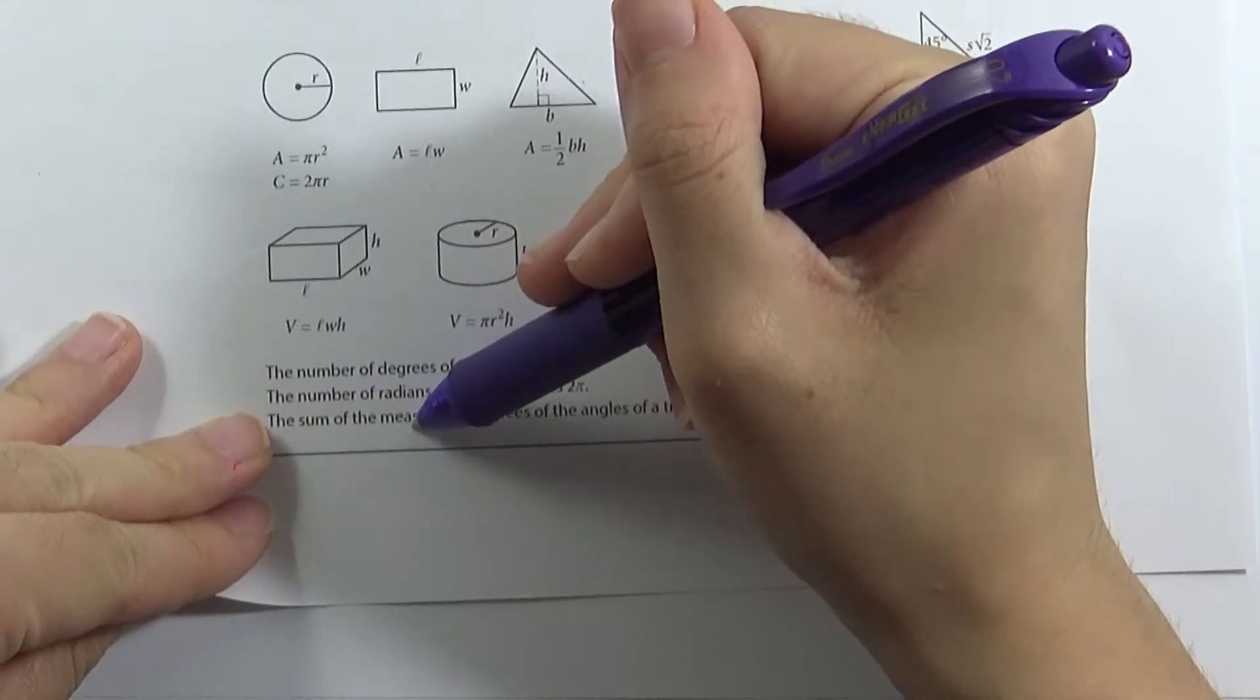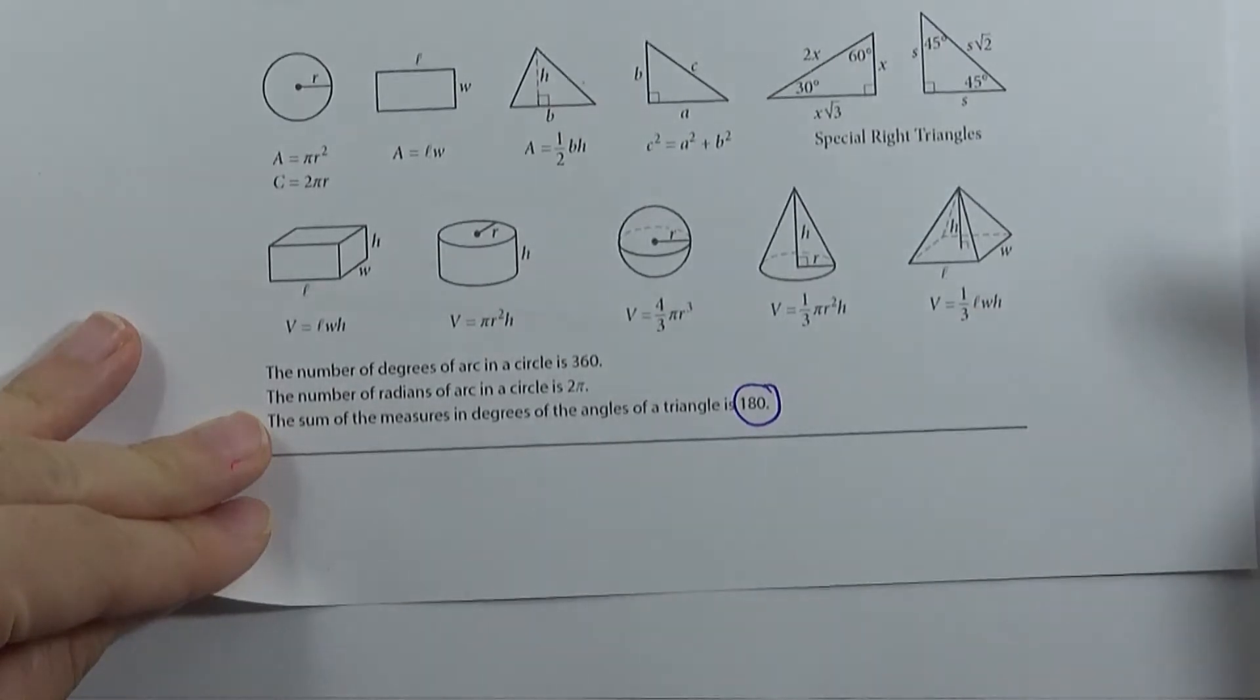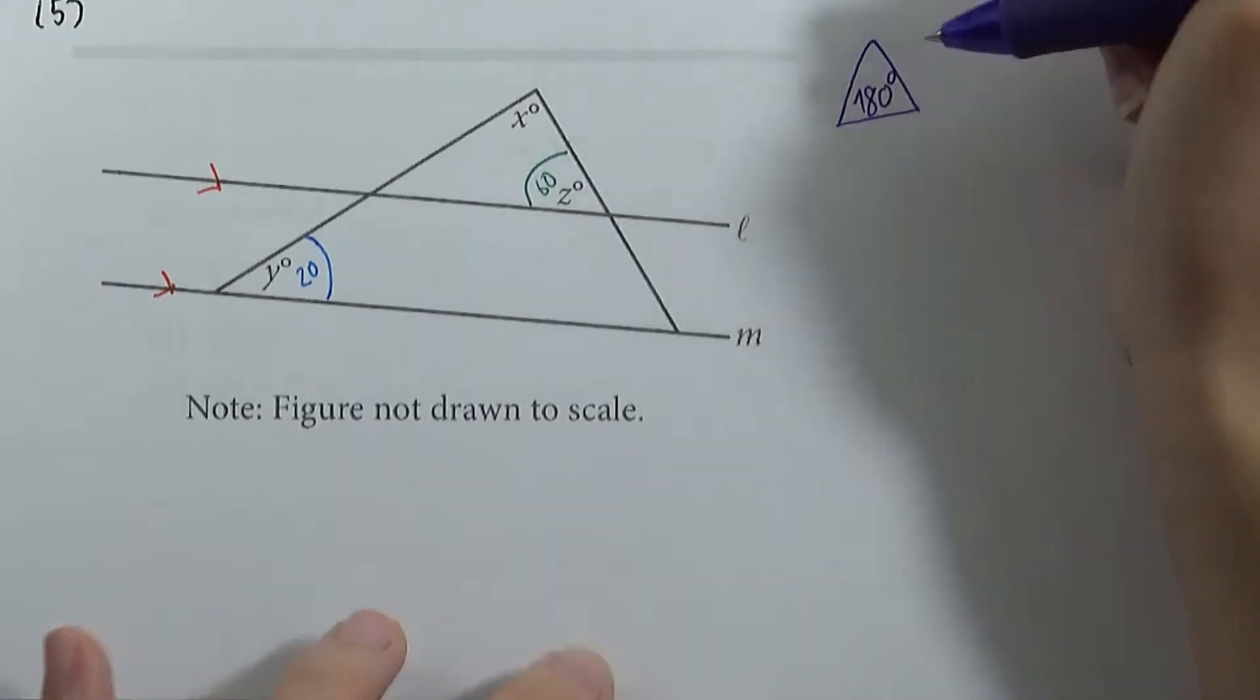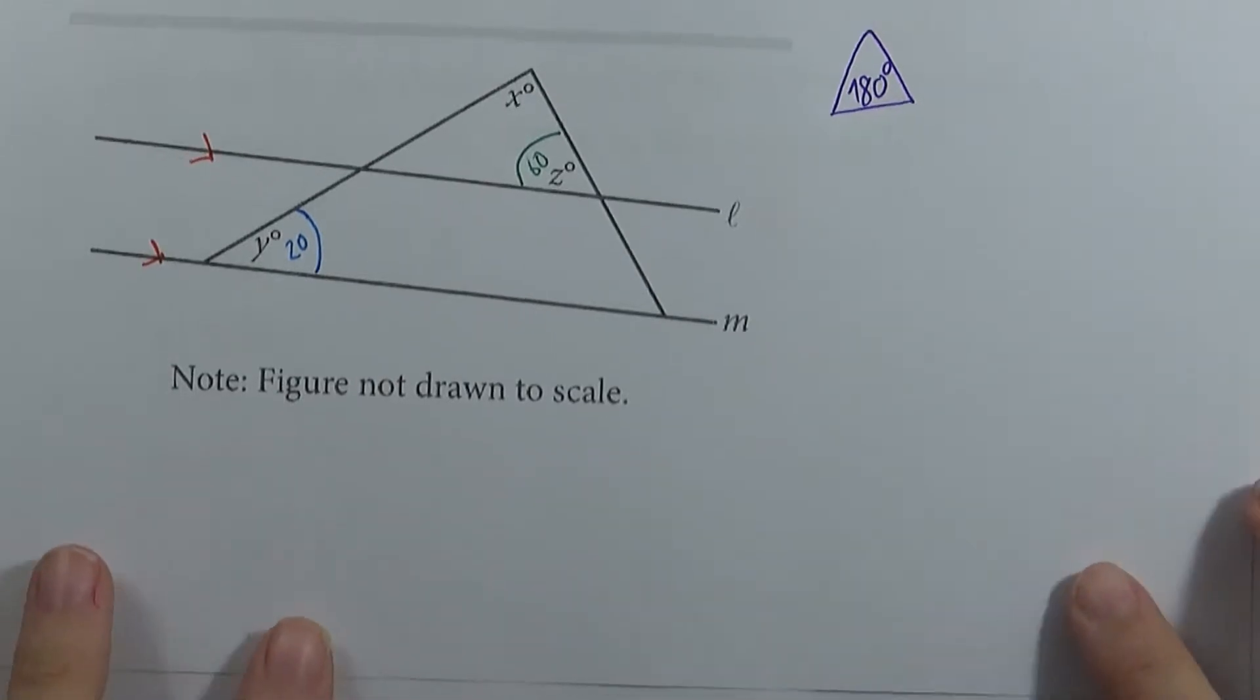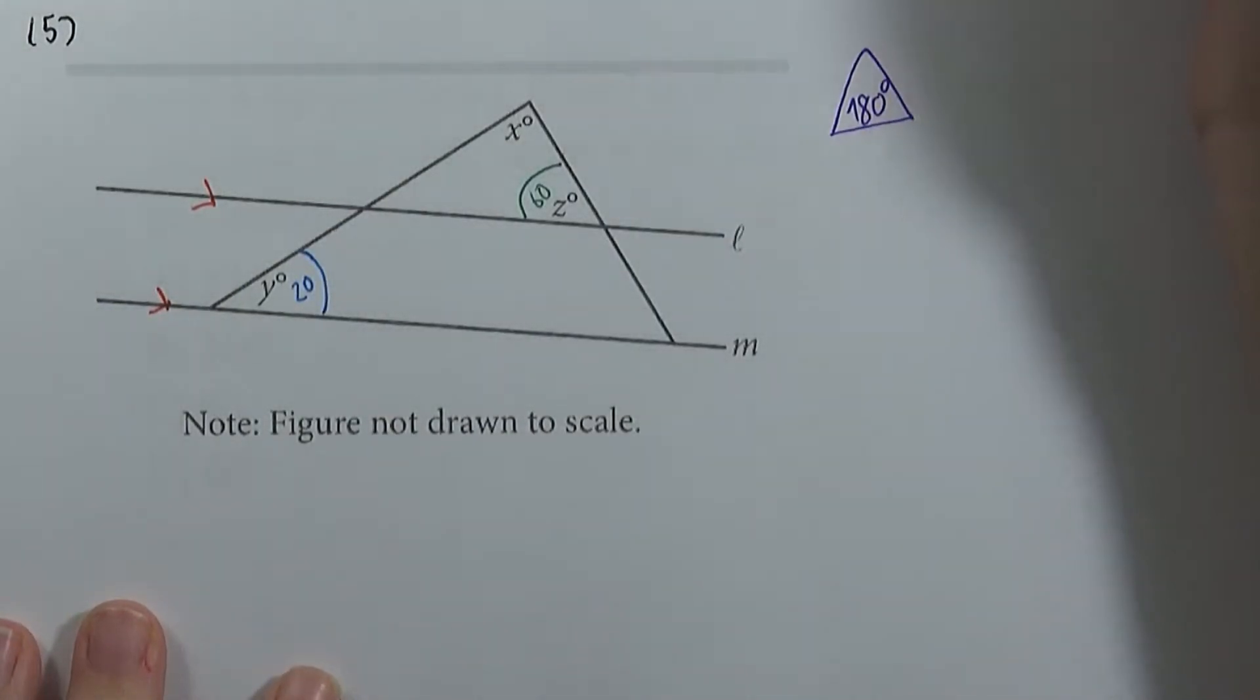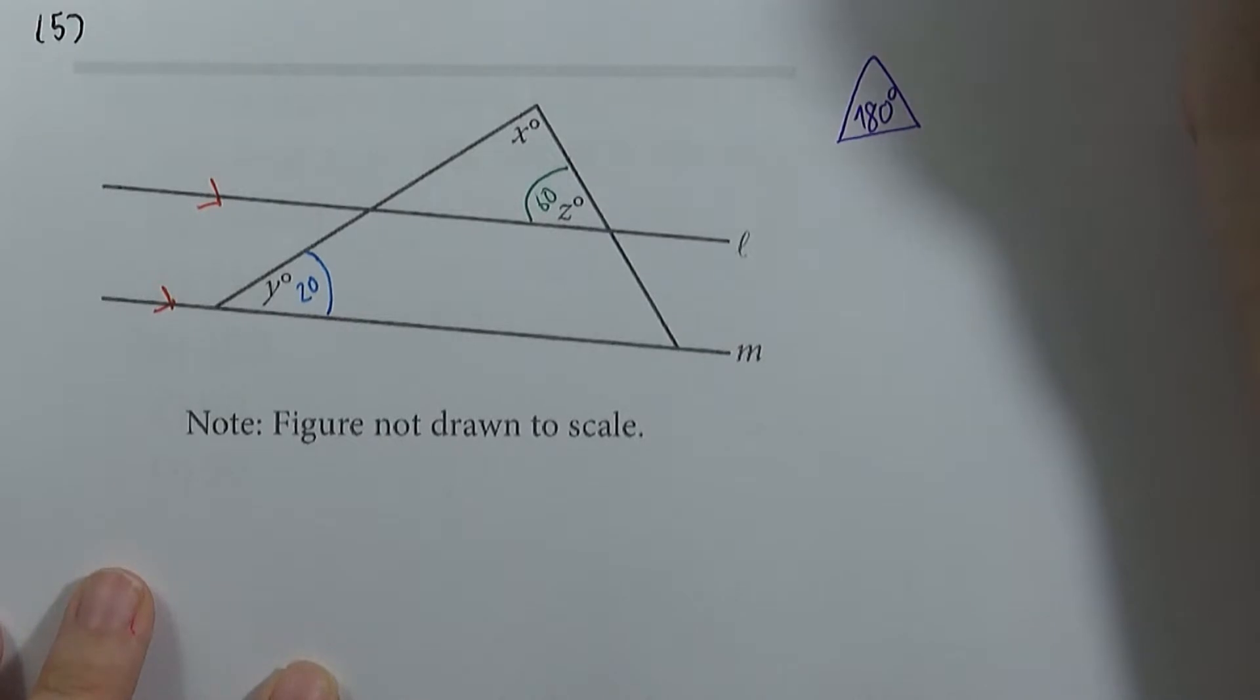The sum of measure in degrees of the angles of a triangle is 180. This is what the size of the angles, the three angles of the triangle. Let's see how everyone knows.